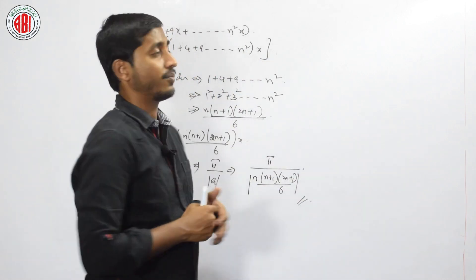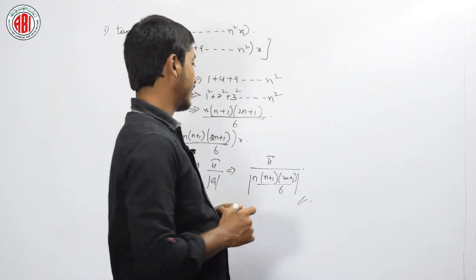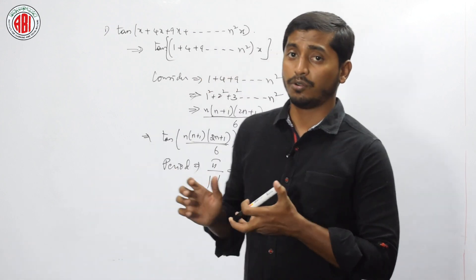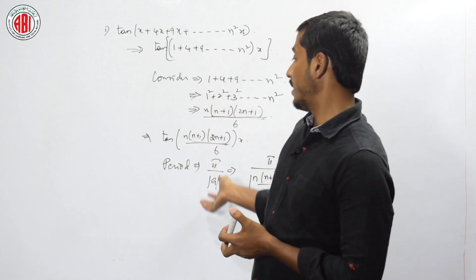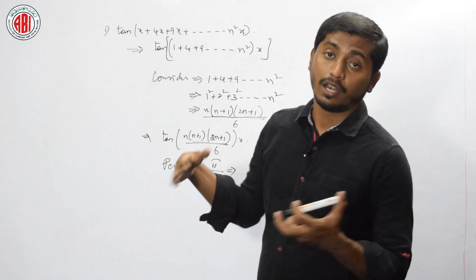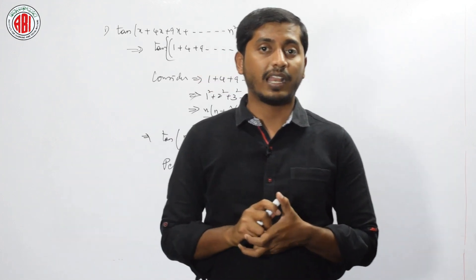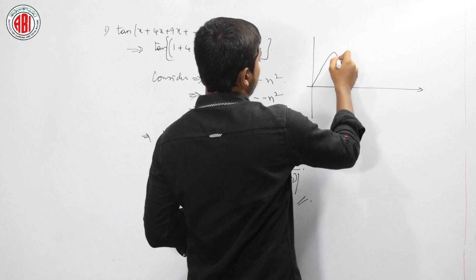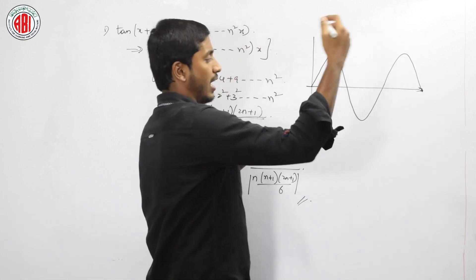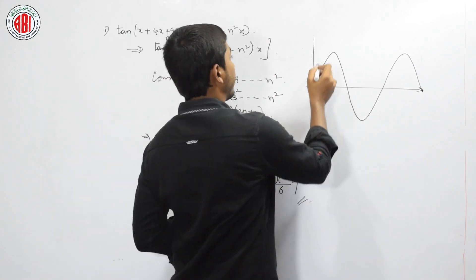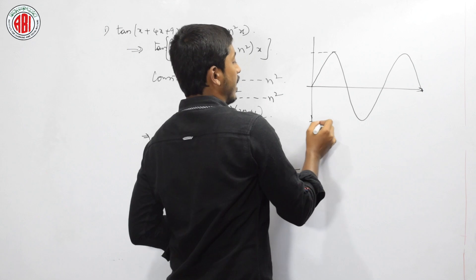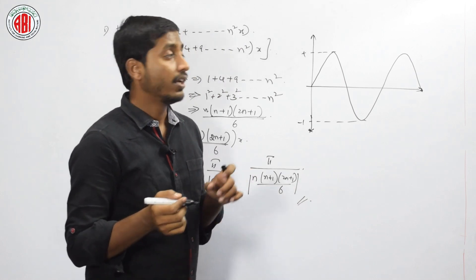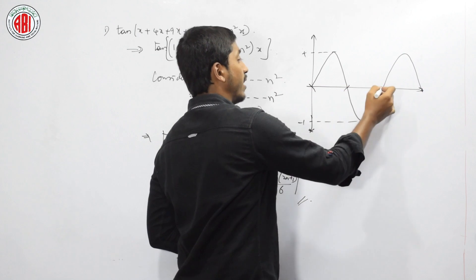Hope you can understand such problems. Now let us discuss a few concepts apart from period. We did one graph — the sine wave — which is always fluctuating between 1 and minus 1. Whatever the angle is, even beyond many angles, it is always fluctuating between plus 1 and minus 1. Whatever angles you substitute, it is always fluctuating between these fixed values.